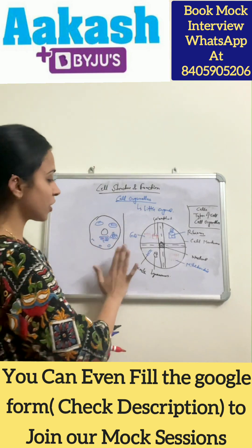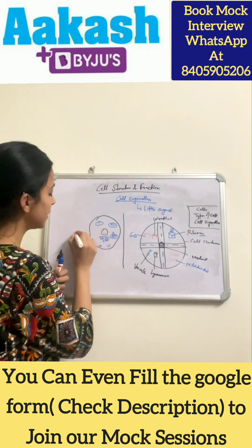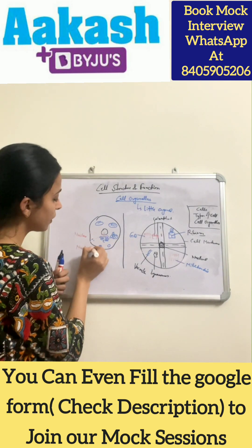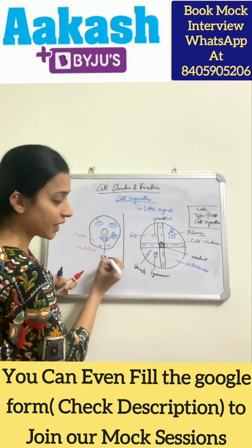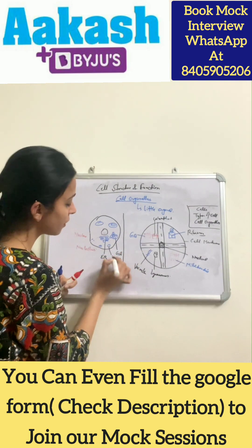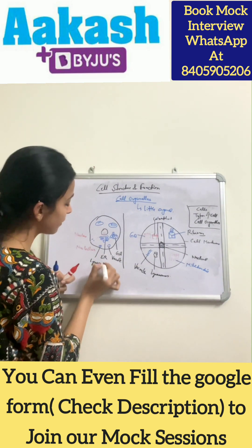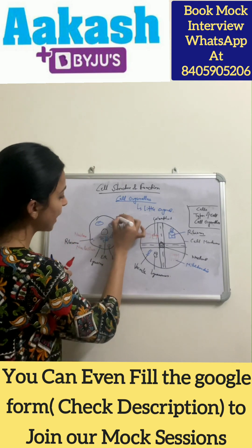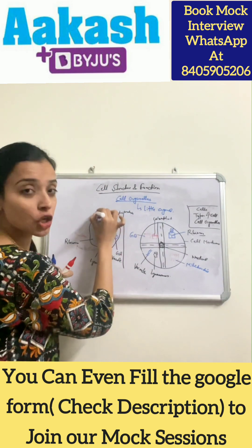Looking at the structure of the cell: here is the nucleus, inside which the nucleolus is present. This is the endoplasmic reticulum, this is the Golgi apparatus, this one is the vacuole, this is the lysosome, these are ribosomes, this is mitochondria, and this one is the chloroplast.